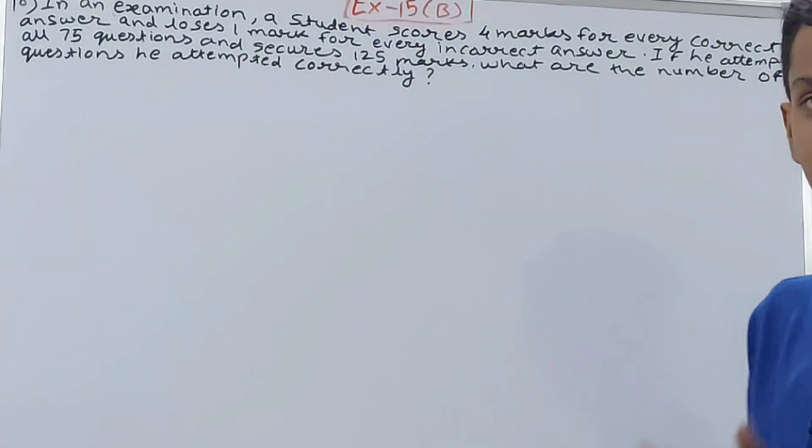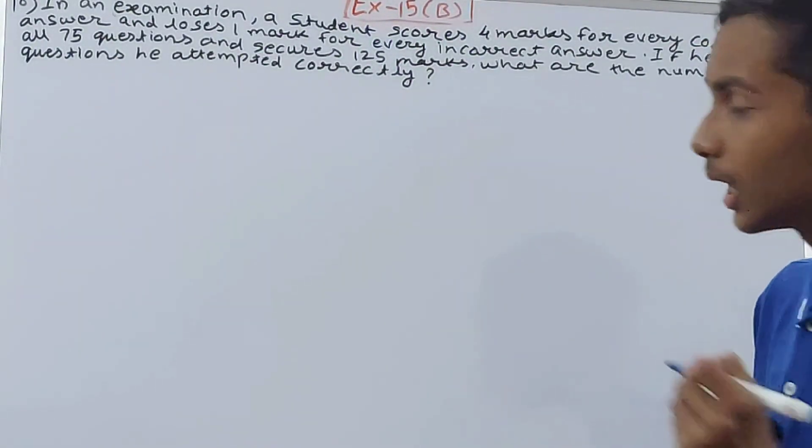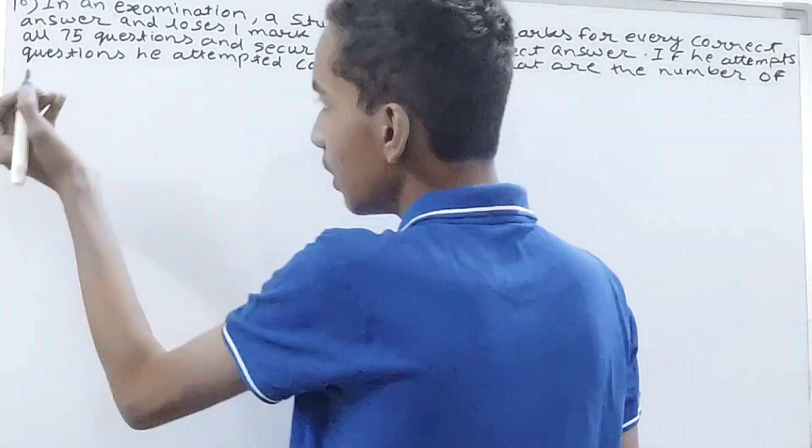So here, negative marking is happening—for every incorrect answer you lose one mark. Now see, total questions are 75, so let the number of correct questions be x. So incorrect questions, how many incorrect questions did he do? That also we have to calculate. So you have 75 minus x. Why 75 minus x? Only because 75 are the total number of questions he has attempted. So 75 he has attempted, out of which x are correct. So if I take away that x, what will be left? 75 minus x.